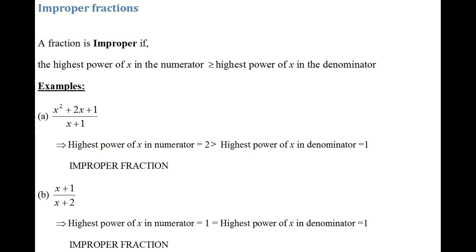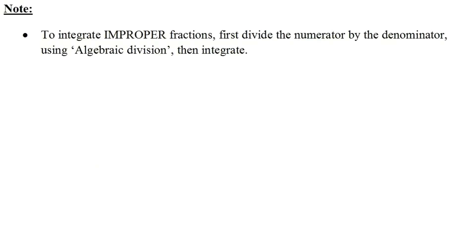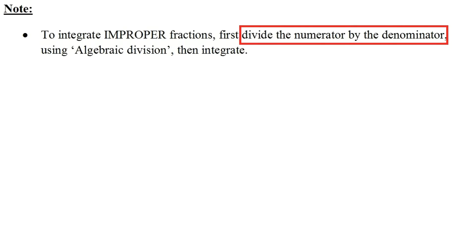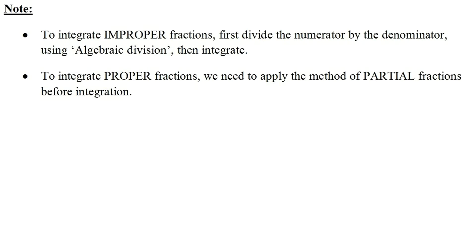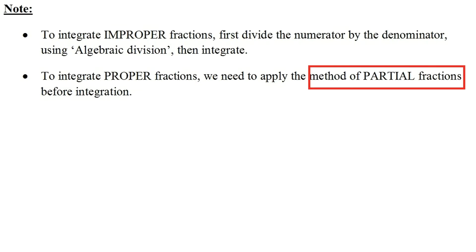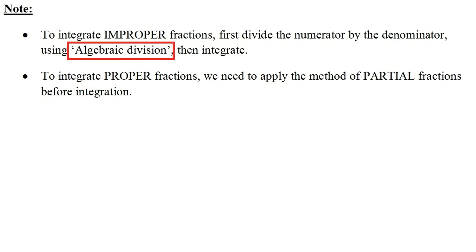Now what do we do with improper fractions? To integrate improper fractions, we need to divide the numerator by the denominator using algebraic division. Once you've divided using algebraic division, you integrate the final result. Remember, for proper fractions, apply the method of partial fractions before integrating. For improper fractions, use algebraic division before you integrate.